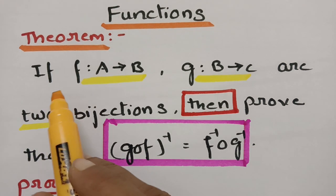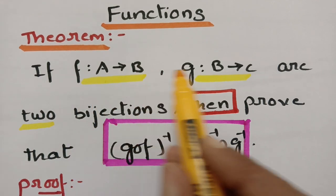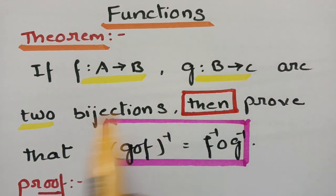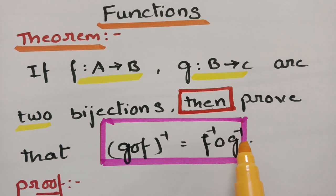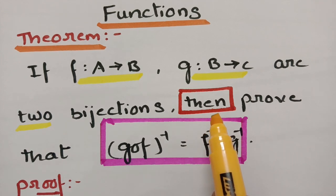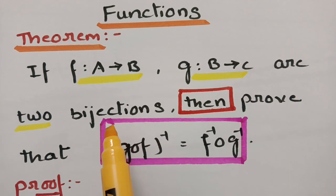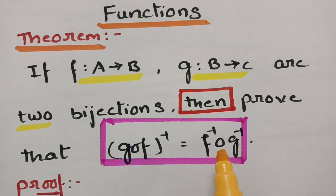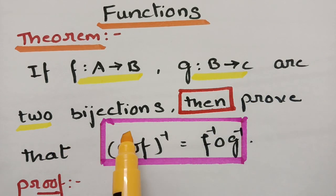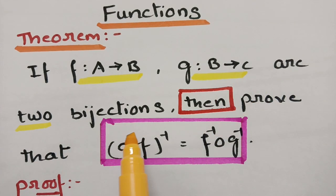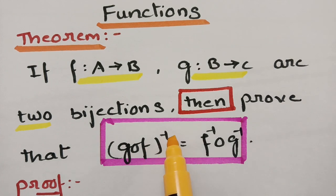The statement of the theorem states that if F maps from A to B and G maps from B to C are two bijections, then prove that G circle F whole inverse is equal to F inverse circle G inverse. In each theorem statement, 'then' plays a vital role. Before 'then', the given statement is provided; after 'then', we have to prove it. What is given: F maps from A to B and G maps from B to C are two bijections. What we have to prove: G circle F whole inverse equals F inverse circle G inverse.